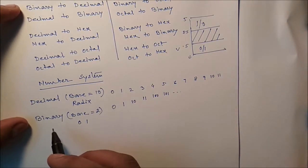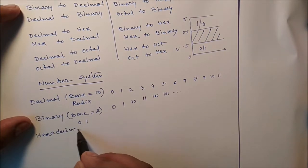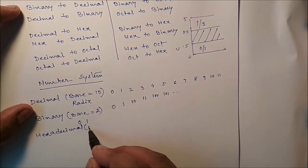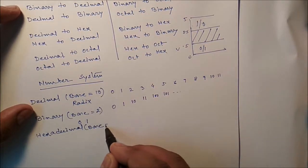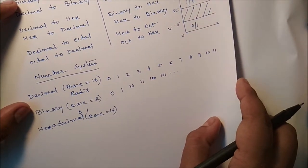Similarly, suppose a number is hexadecimal. A number is hexadecimal. So here the base is 16. Base is equal to 16.